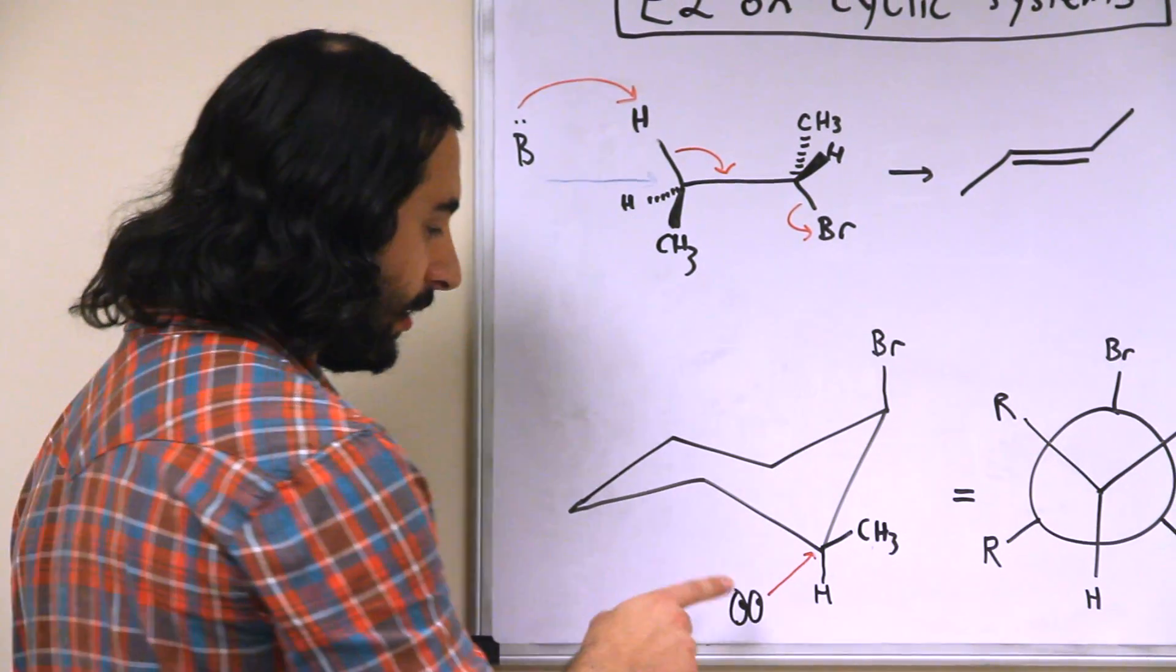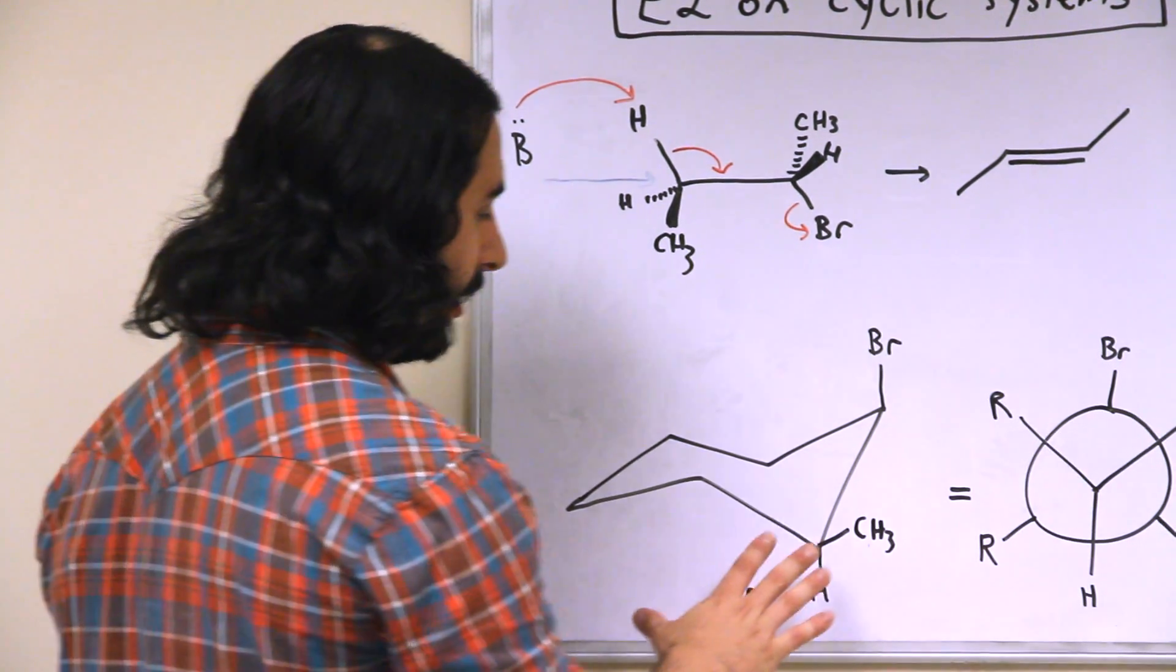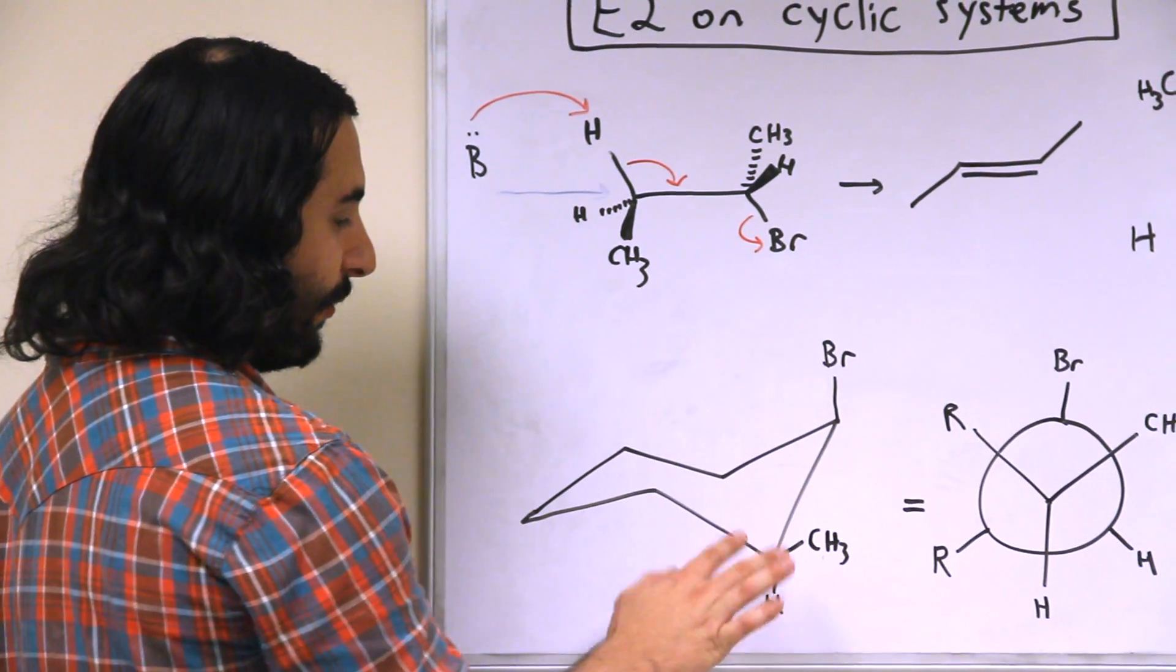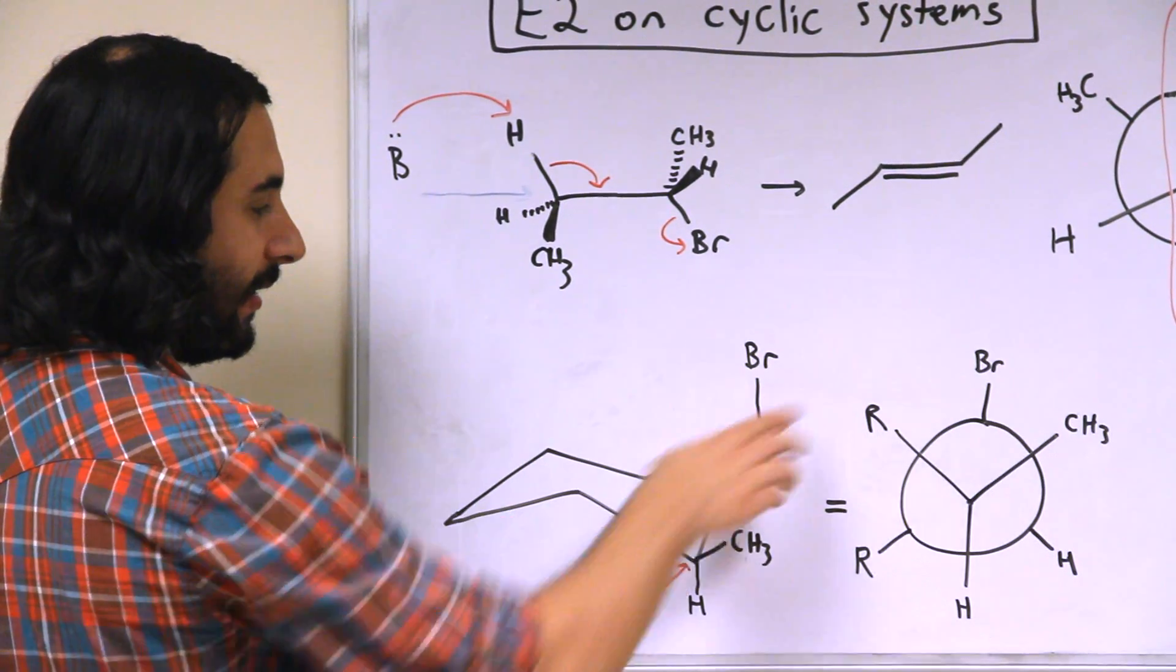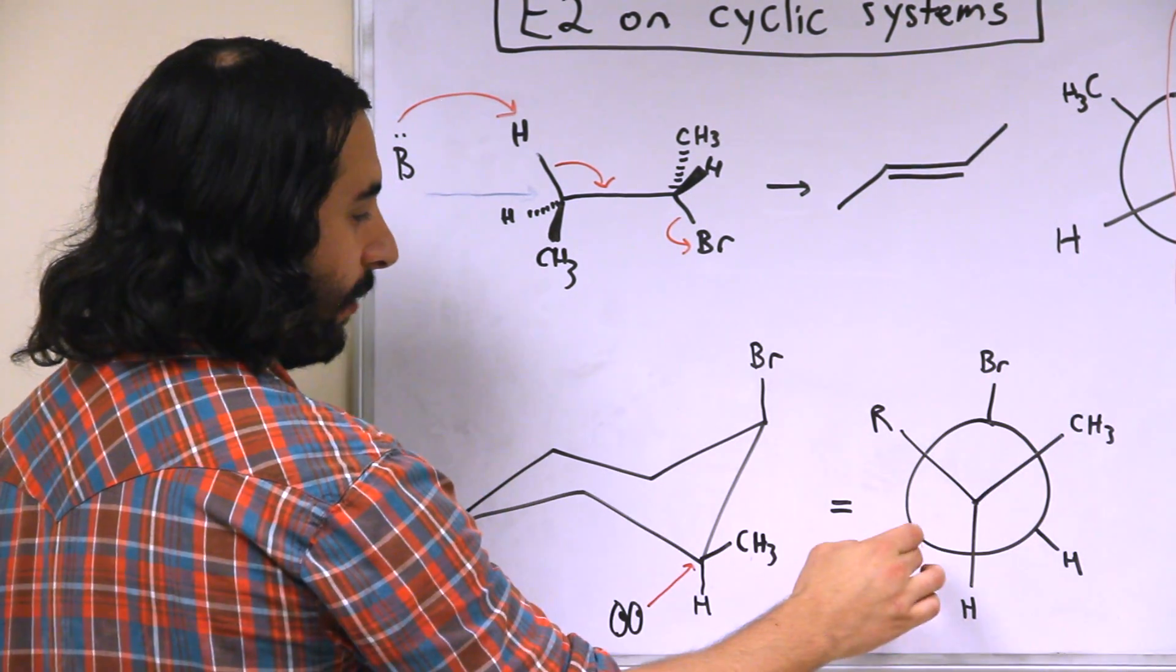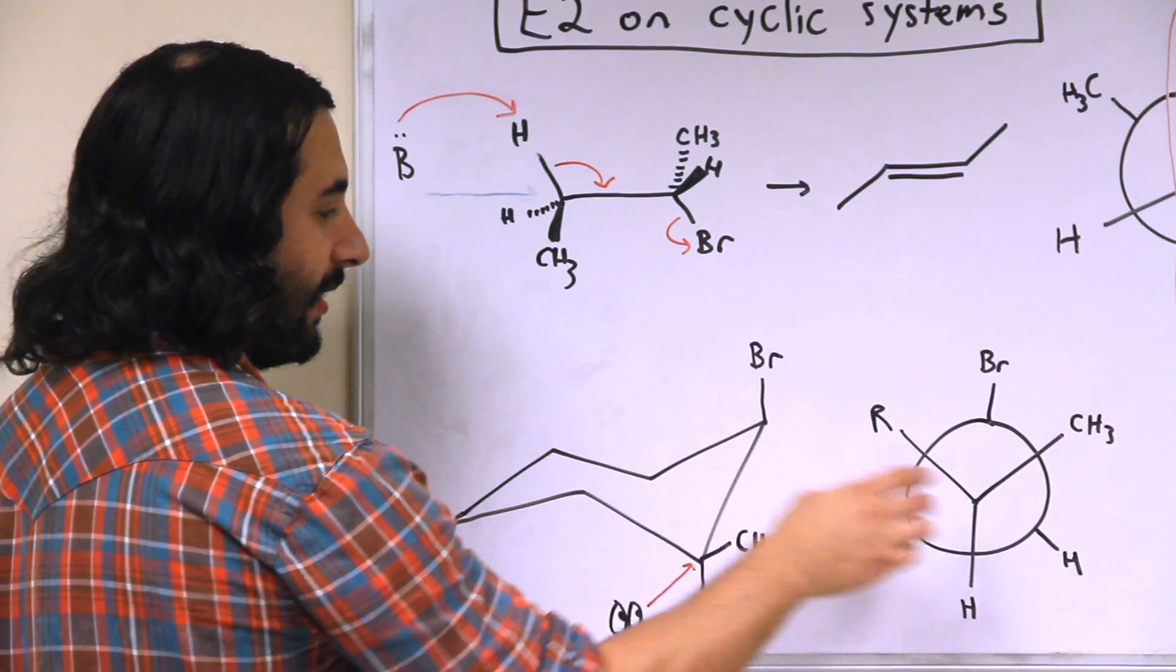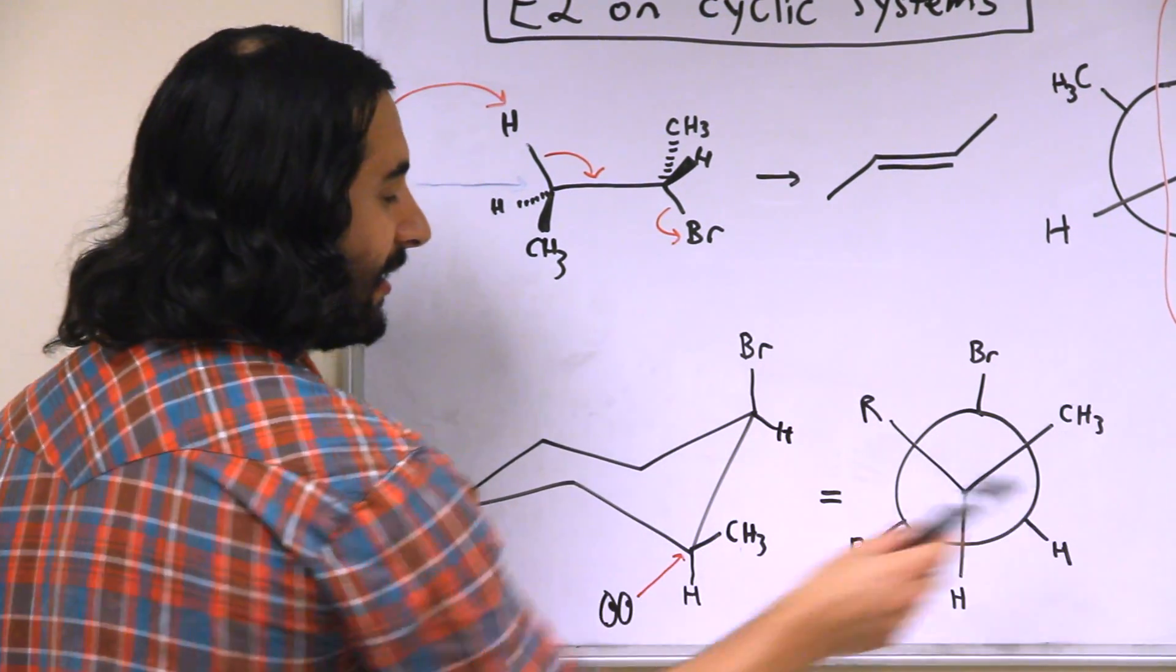So let's take a look here. We're going to look down this bond on our chair structure, and we're going to see that on the front carbon, we've got a proton down, methyl up into the right, and the rest of the ring to the left. On the back carbon, we have the bromine up, the rest of the ring down to the left, and then we have the implied hydrogen down into the right.